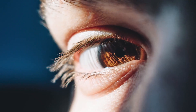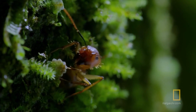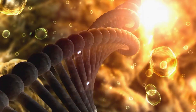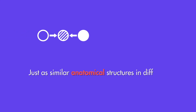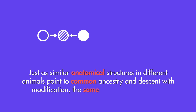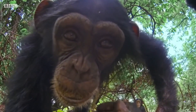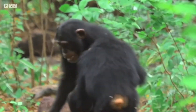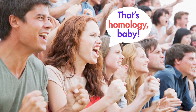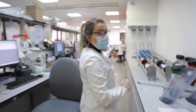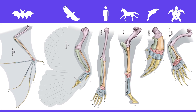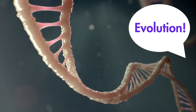Darwin's original argument from homology was concerned with anatomical structures as one could see them with the naked eye. However, the rise of biochemistry in the 20th century opened up the possibility of investigating homology not only on the anatomical, but also on the genetic or molecular level. Just as similar anatomical structures in different animals point to common ancestry and descent with modification, the same can be said of similar molecular structures. You've probably heard people say that evolution must be true because we share 99% of our DNA with chimpanzees — it isn't actually true that our DNA is 99% similar to that of chimps, but this is essentially a popular and simplified version of the argument from homology.